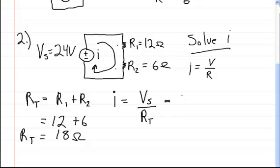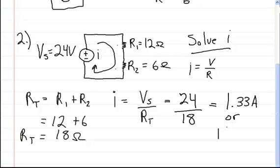And that's going to be equal to 24 volts divided by the 18 ohms. And that's going to be equal to roughly 1.33 amps, or 1 and a third amps. And that's what the current is going to be equal to.